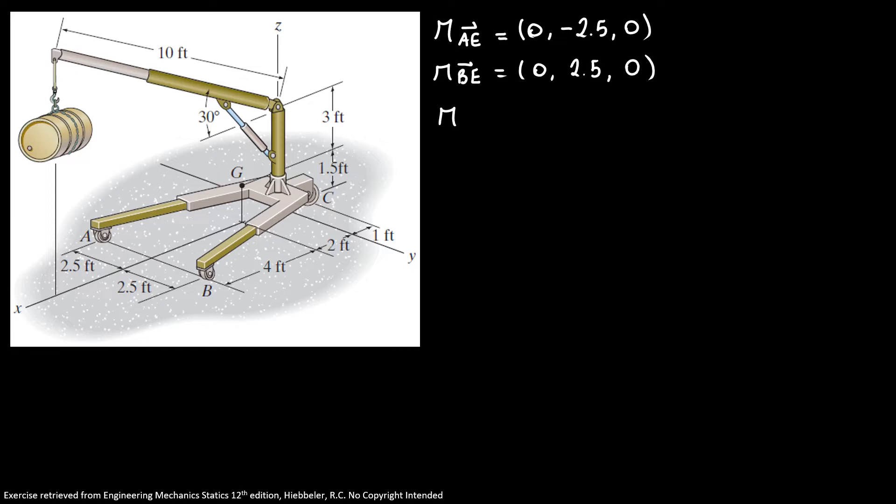To find our distance DE is equal to 10 cosine 30, that's 8.66 minus 6, 0 and 9.5 minus 0. And finally, our point GE, we have 2 minus 6, 0 and 1.5.